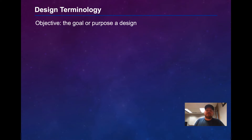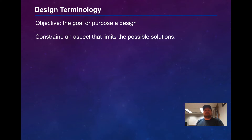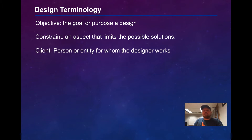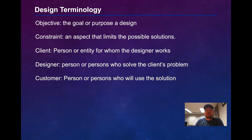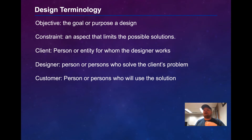The first term to introduce is objective. The objective is the goal or purpose of a design. A constraint is any aspect of a problem that limits the possible solutions. We have clients — this is who the designer is working for. The designer is the person or people who solve the client's problem. The customer is the people who may use the solution. The client and the customer may be the same entity, or they may be different entities.